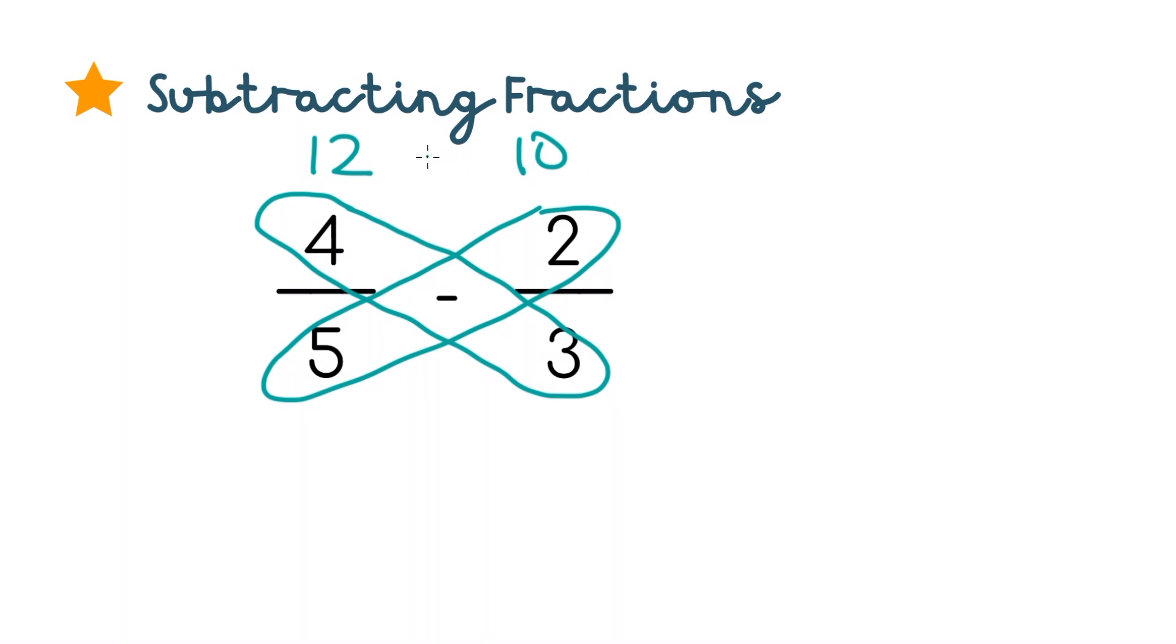Except this time, we'll subtract the numbers instead of add them. So 12 minus 10 is 2, and we'll put that in the numerator of our answer. For the denominator, we'll do the same thing and still just multiply 3 times 5, which is 15. So the answer when we subtract is 2 over 15.